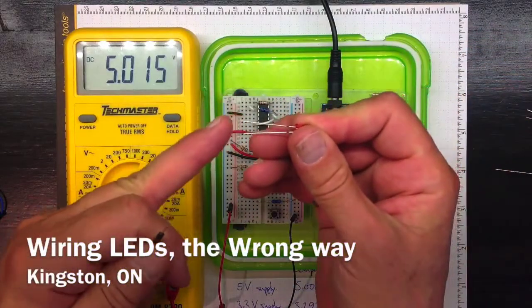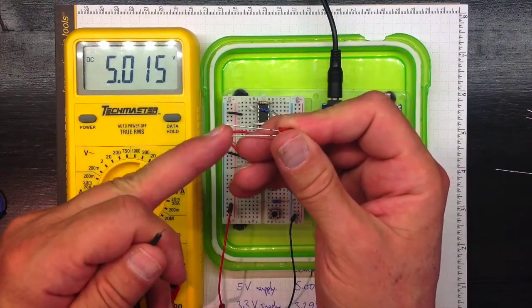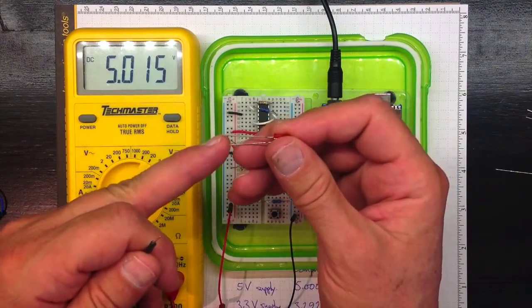This red LED has two prongs on it, two wires. The longer one goes to the positive side and the shorter one to the negative side for current to flow.